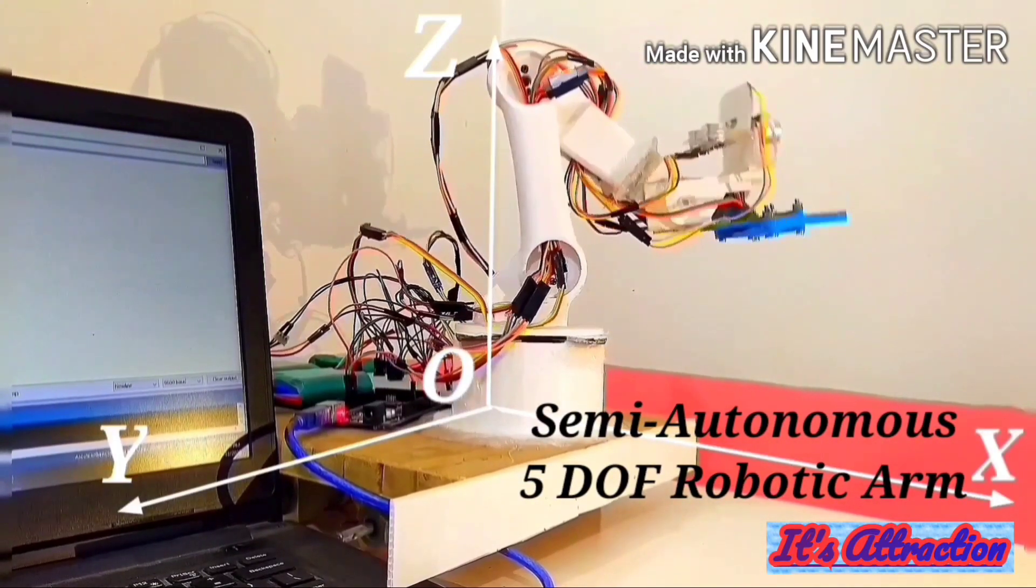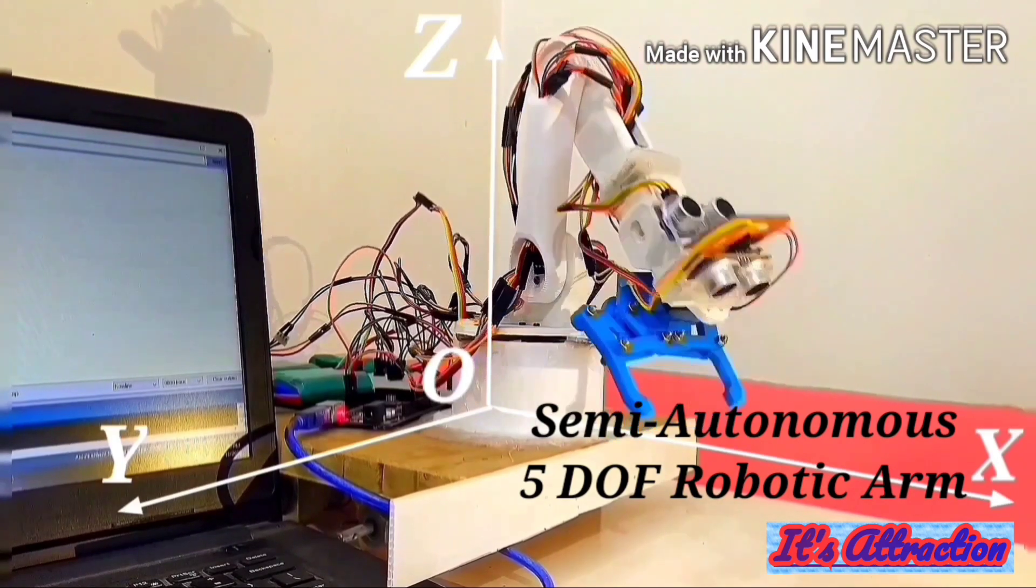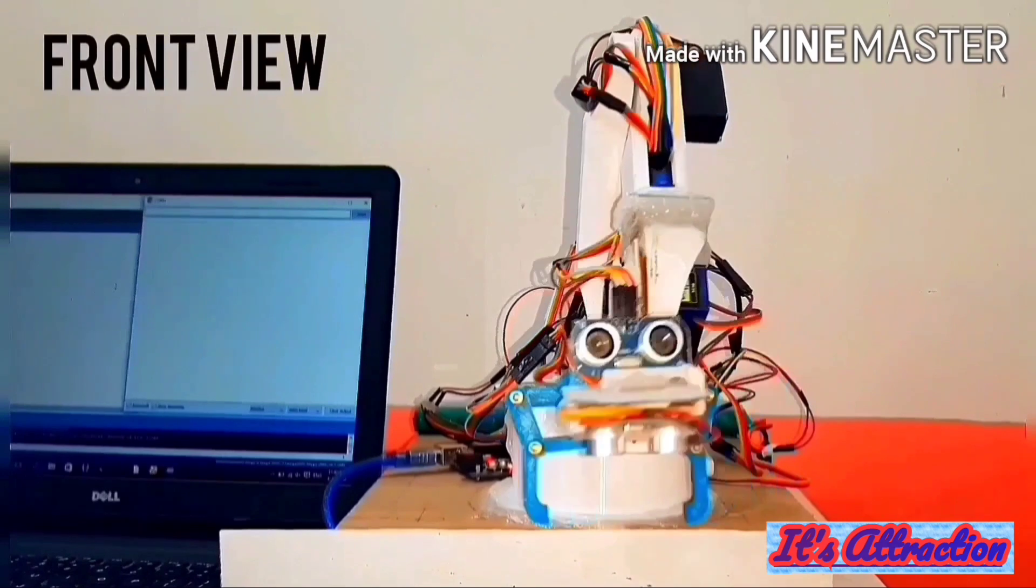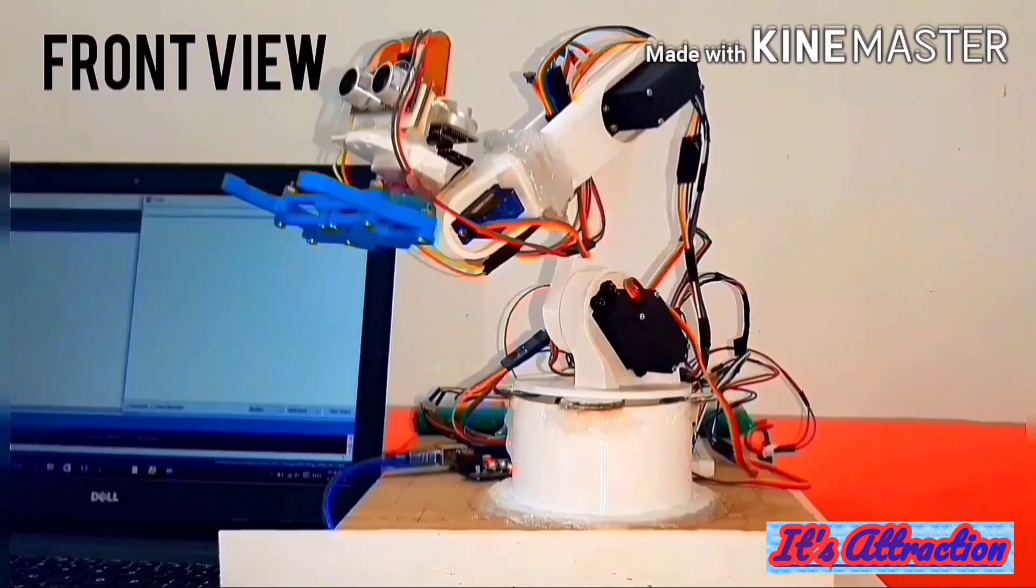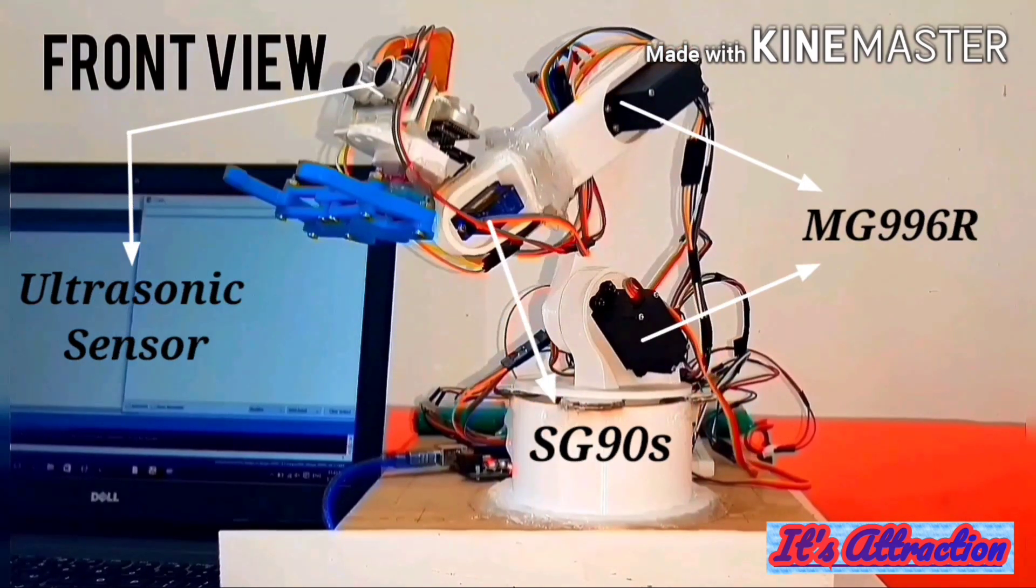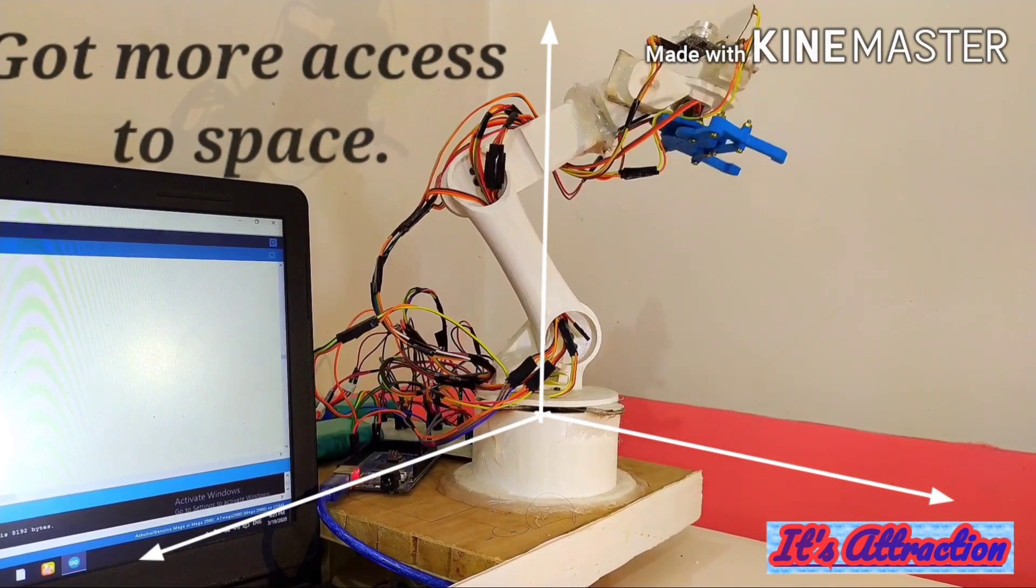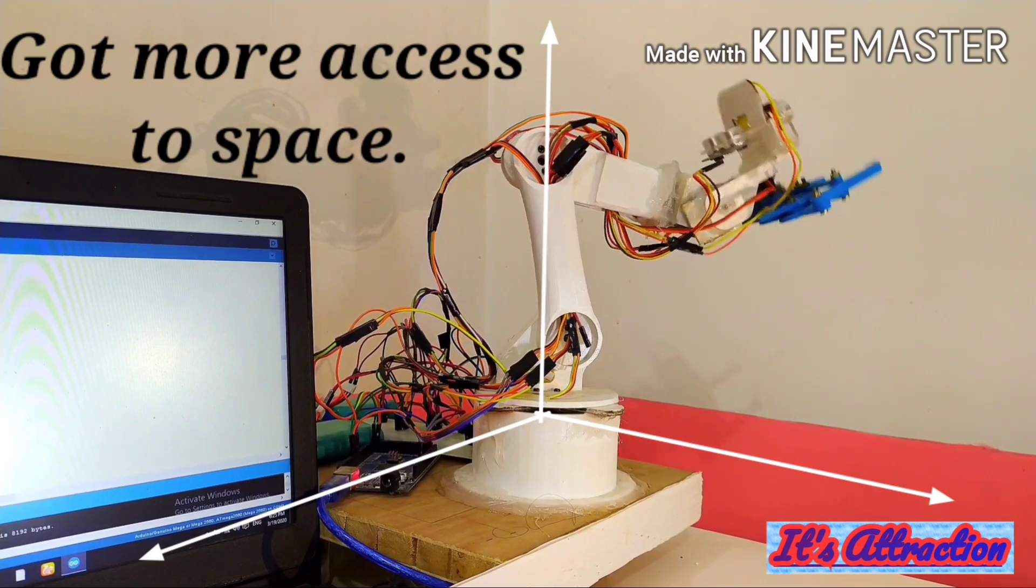This is a semi-autonomous five degree of freedom robotic arm controlled by Arduino Mega, equipped with a couple of SR04 ultrasonic sensors and five servo motors. This robotic arm can access more space as compared to the three or four axis robotic arm.